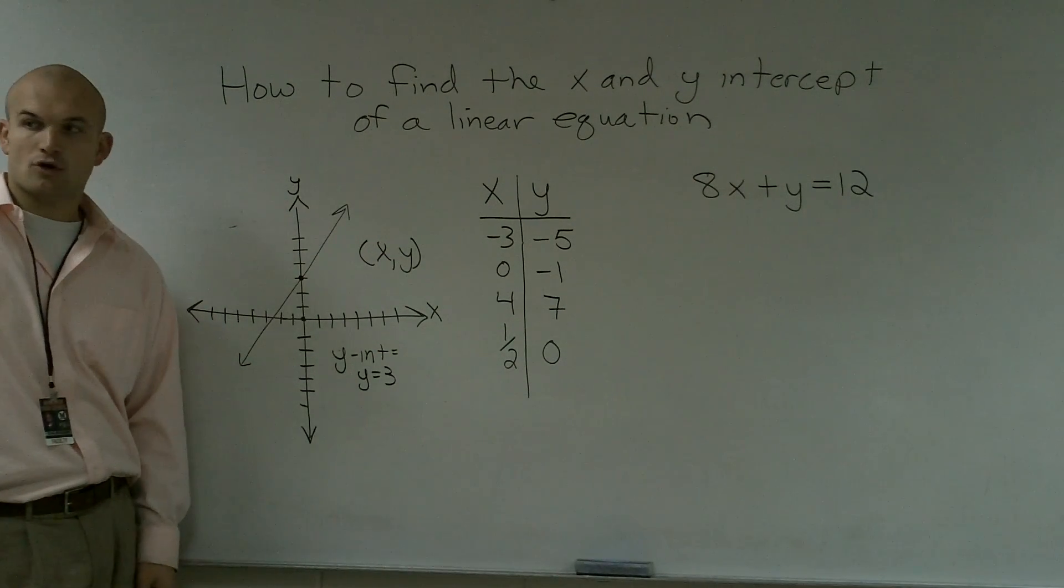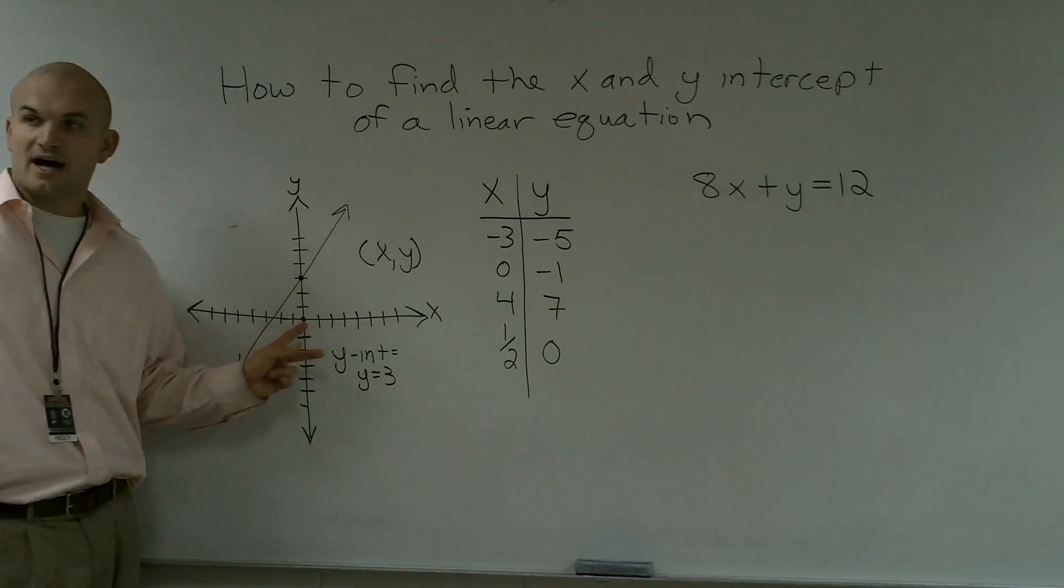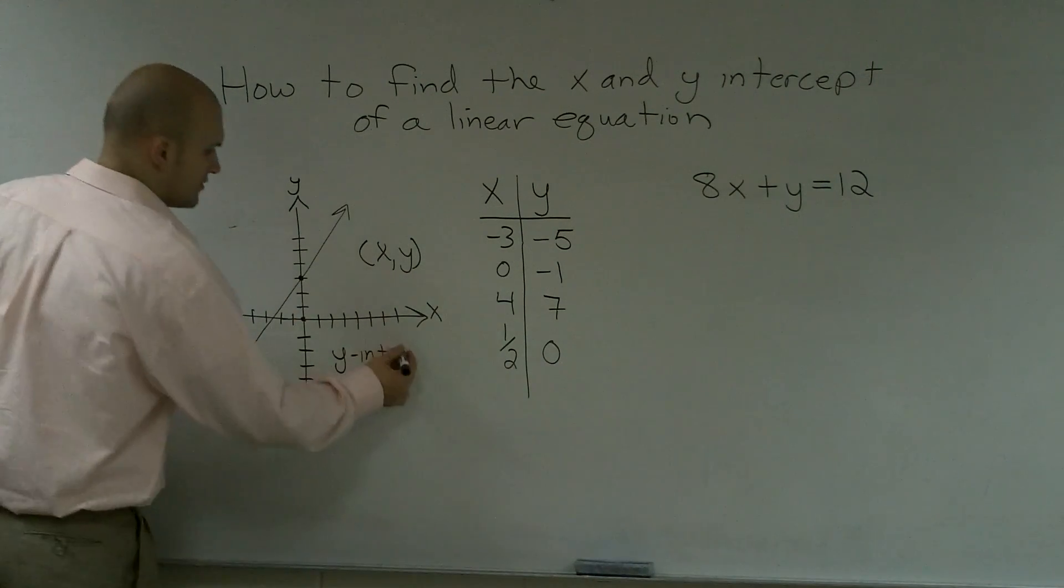So if I want to write my y intercept as a coordinate point, my x value is going to be 0, and my y value is going to be 3.